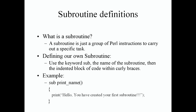Here's a quick example of what a user-defined subroutine looks like. We have our keyword sub, then our Perl identifier — the subroutine name. I used a mixture of letters and underscore, so print_name is the name of my subroutine, followed by a pair of parentheses. At the bottom I have my opening and closing curly braces.